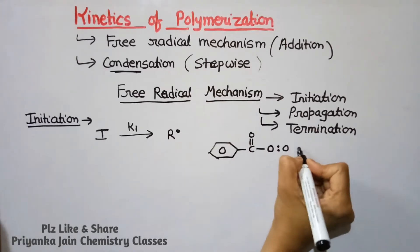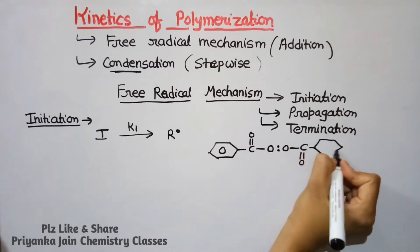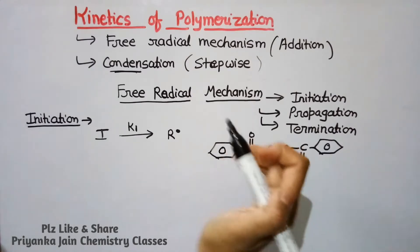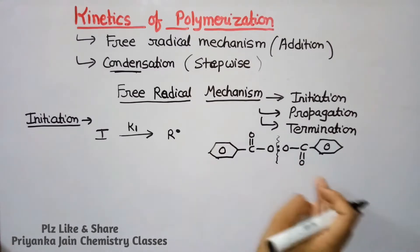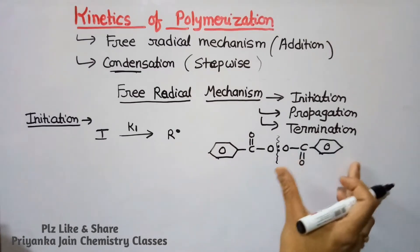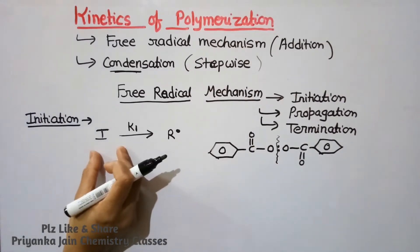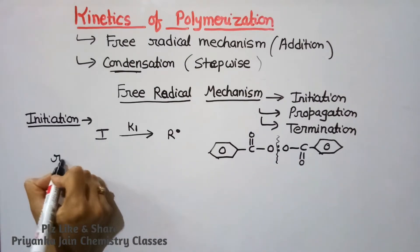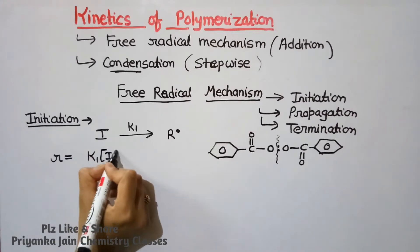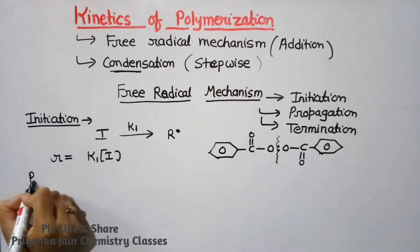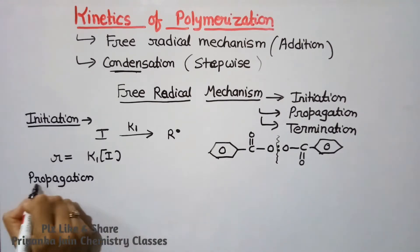Benzoyl peroxide has a structure where, when the reaction initiates, the central bond breaks and we get two radicals. This is the initiation step, and the rate of this initiation step is given by K1 times the concentration of I.